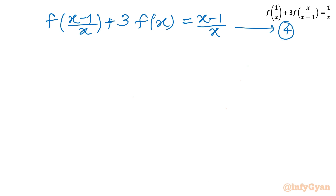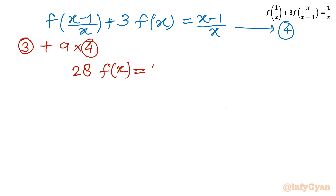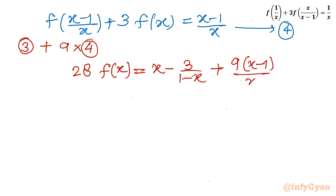Now I will perform the operation: equation 3 plus 9 times equation 4, so that the 9 times f of x minus 1 over x terms cancel. After that, the equation comes out as 28 f(x) equal to x minus 3 over 1 minus x, plus 9 times x minus 1 over x.